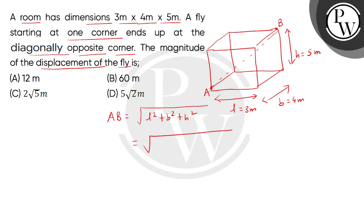Let's put in the values: square root of 3 squared plus 4 squared plus 5 squared. This equals square root of 9 plus 16 plus 25, which is square root of 50.